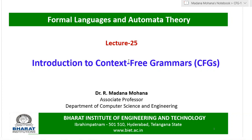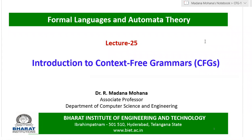As per the Chomsky hierarchy, formal languages are classified into four types, denoted as type 0, type 1, type 2, and type 3. We are studying all four types in reverse order, that is in increasing order of computational power. Type 3 has the least computational power. Now we move to the next highest computational power category, type 2. The type 2 language is called context-free language, its grammar is context-free grammar, and its acceptor is called pushdown automata.